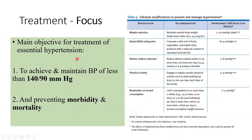Regarding treatment — the main objective is to keep blood pressure below 140 systolic and below 90 diastolic. These are the cutoff values used in the diagnosis of hypertension, and you want to keep pressure lower than these values. That is the mainstay of treatment.